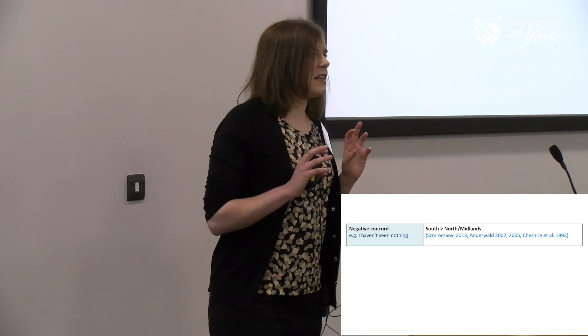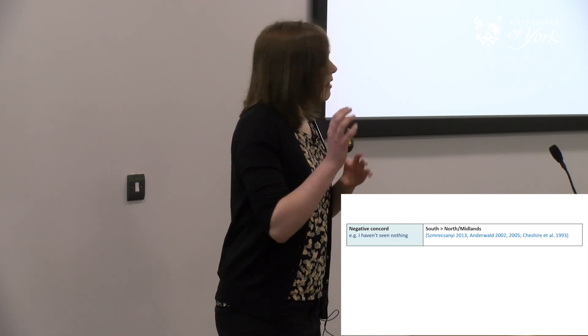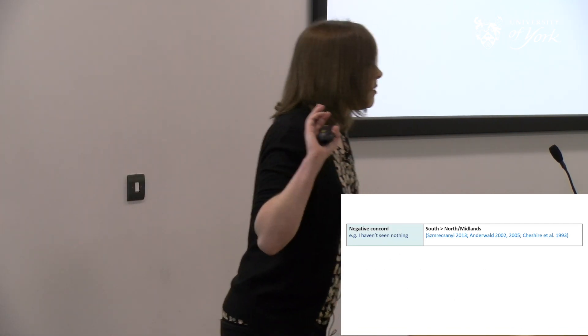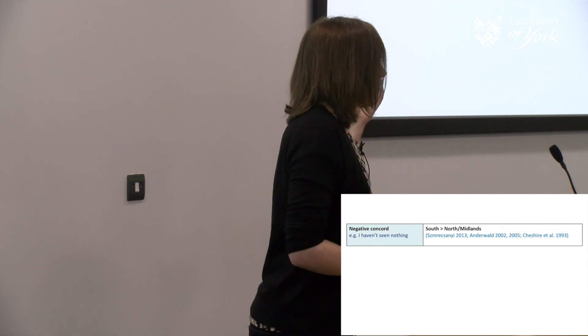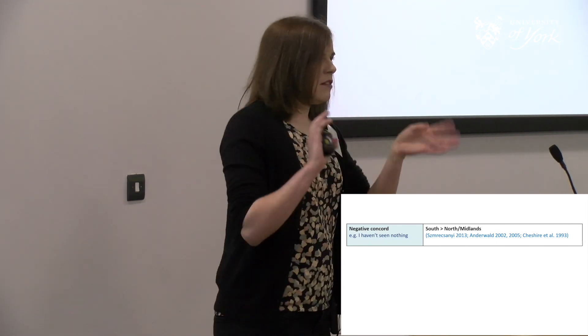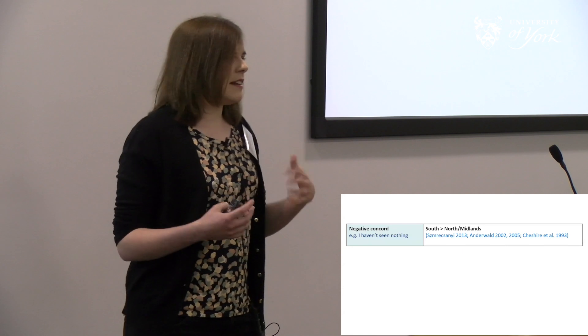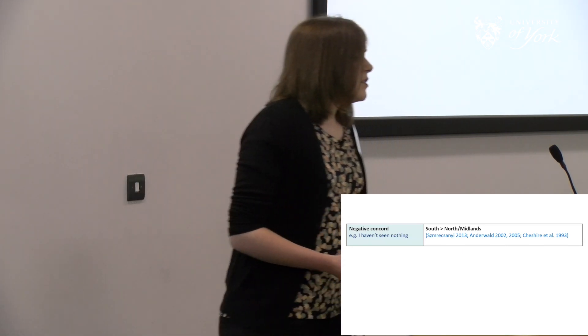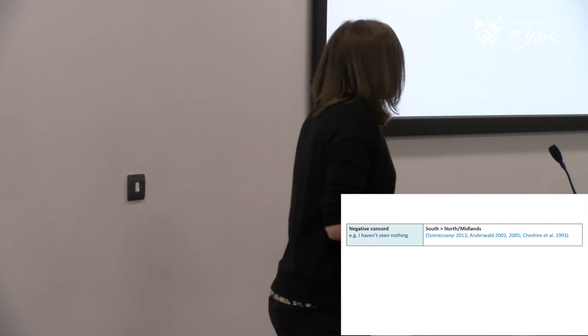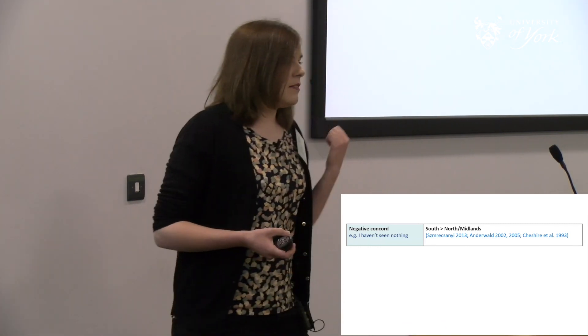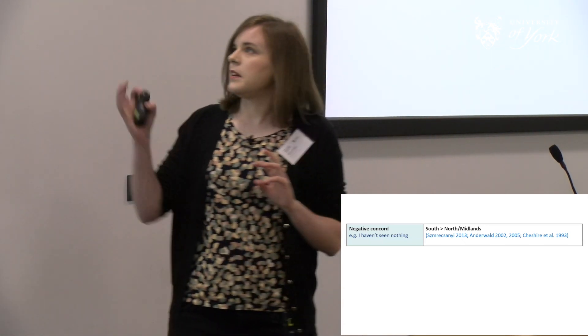The sentences feature aspects of co-variation. The first feature is negative concord — sentences like 'I haven't seen nothing,' where you have two negatives but only one negative meaning. This is essentially equivalent to 'I haven't seen anything.' Research has found negative concord is more common in the south of England than in the north or Midlands.